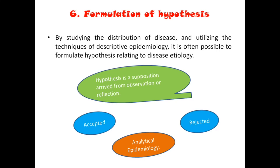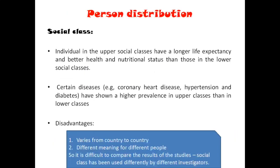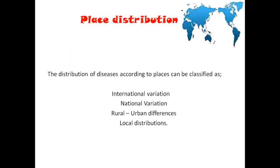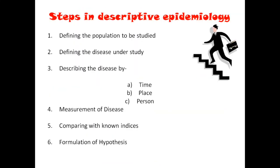To recap the steps: first was defining the population, then defining the case using an operational definition, then describing the disease based on time, place, and person, then measuring the disease by using tools of epidemiology (incidence and prevalence), comparing with other groups with the same problem, and finally formulating a hypothesis. The hypothesis, for example: 'drinking water from that particular pipe or restaurant could be the cause of cholera.' You cannot say it is the cause — you say it could be the cause. In the next study design, the analytical study, we test whether the hypothesis is true or false.